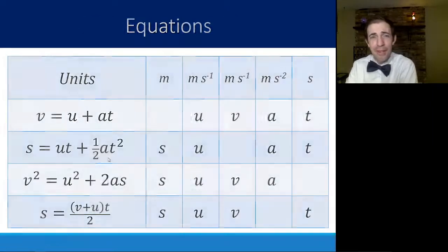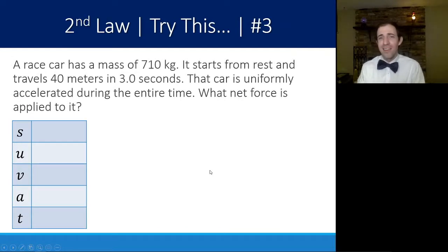Here we have a race car that has a mass of 710 kilograms. It starts from rest, travels 40 meters in three seconds. The car is uniformly accelerated during the entire time. What is the net force applied to it? If I'm asked to find net force, it's a pretty safe bet that I need to use this equation. F is equal to ma. The net force is the mass times acceleration. Here I know the mass. That's 710 kilograms. But none of these are acceleration. It starts from rest. That's the initial velocity, zero. It travels 40 meters. That's the displacement. And three seconds. That's the time.